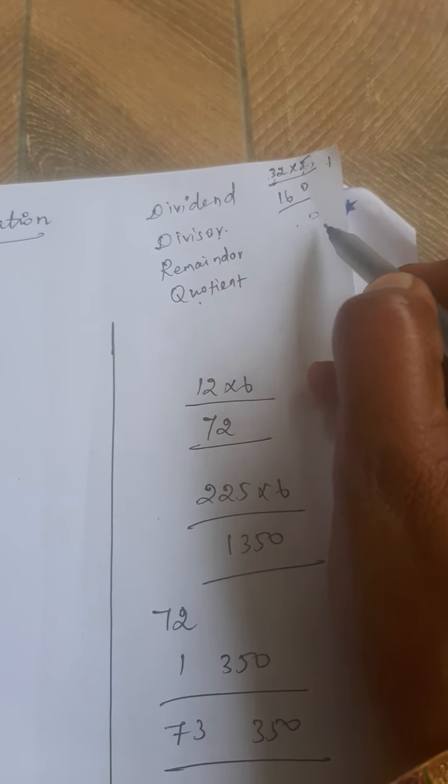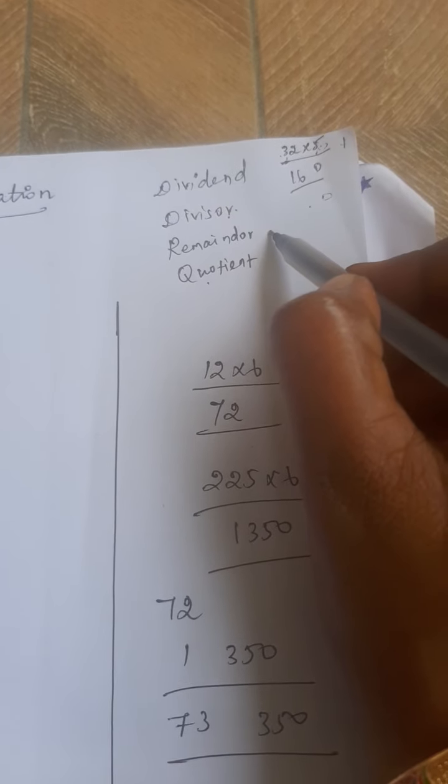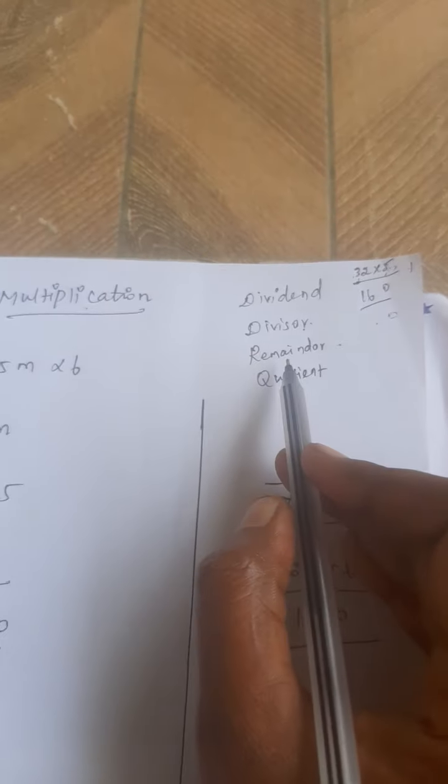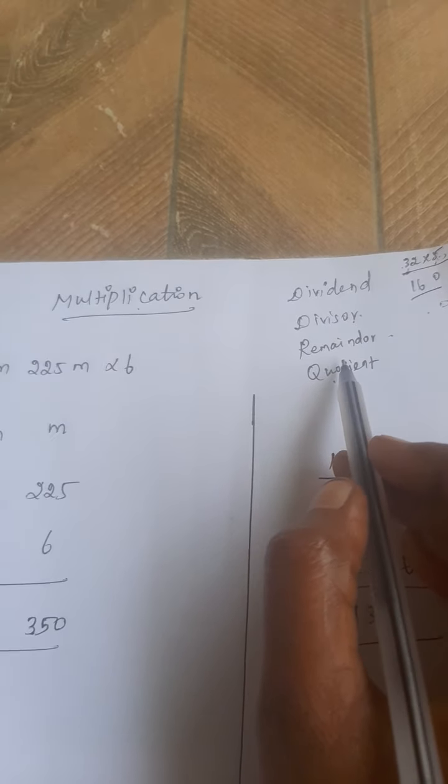And remainder, what is the? 0. Reminder is 0. Do you know the terms? Then only we can multiply the sum. Now we go to the sums.